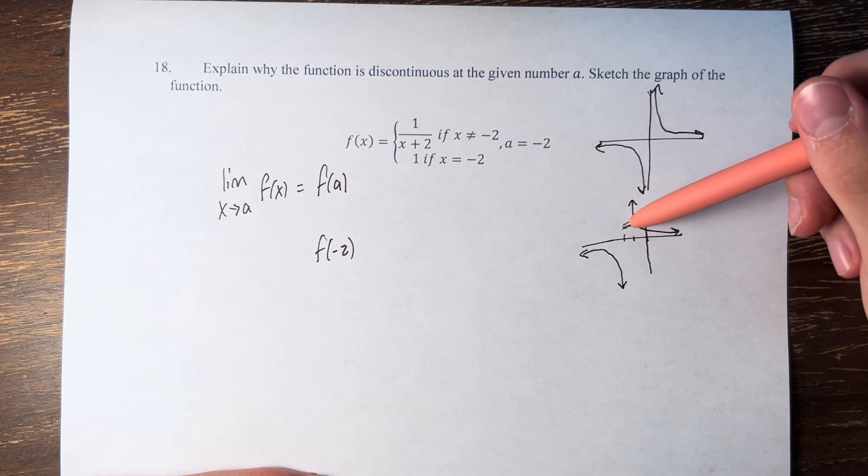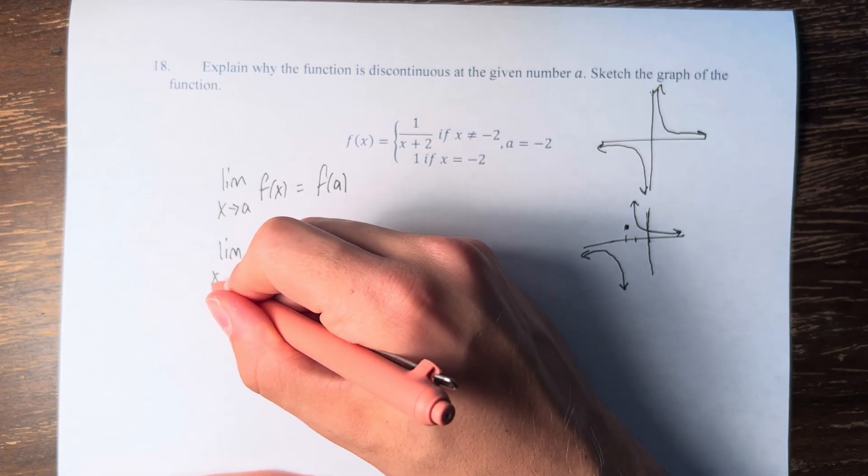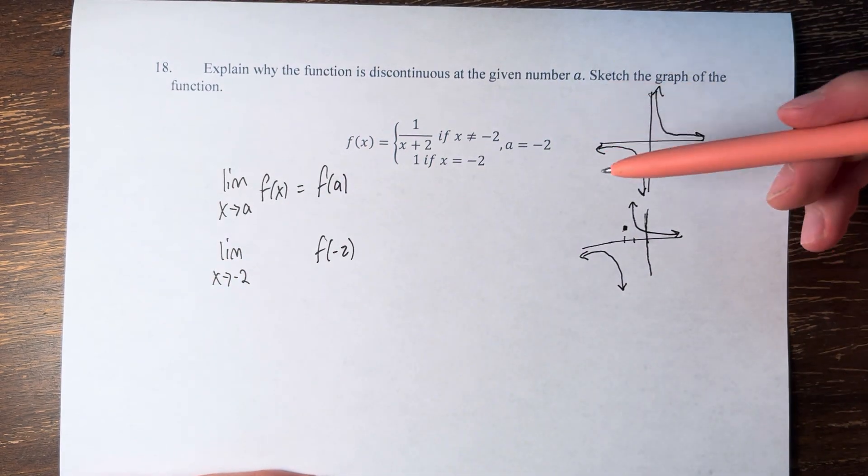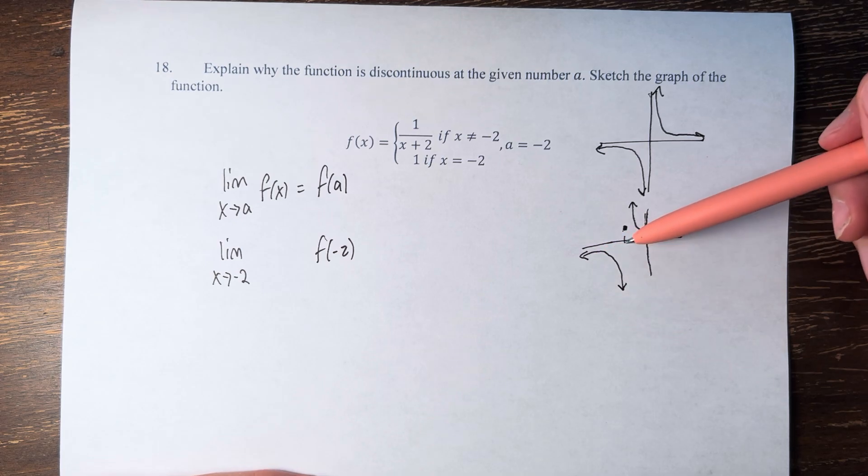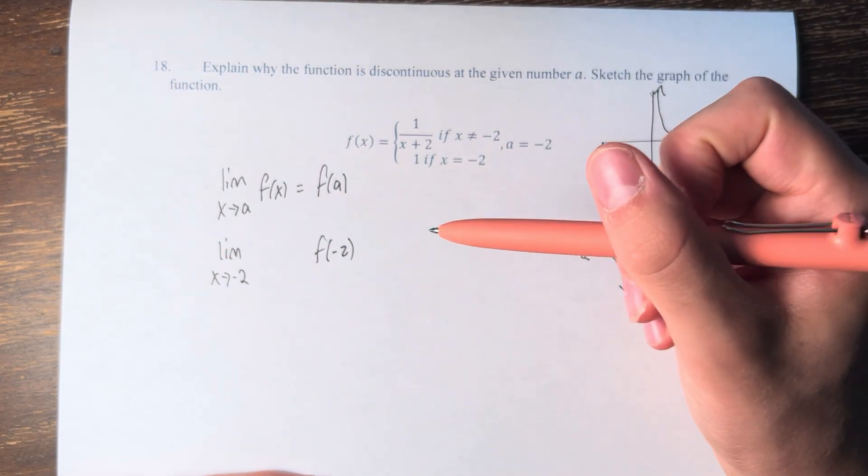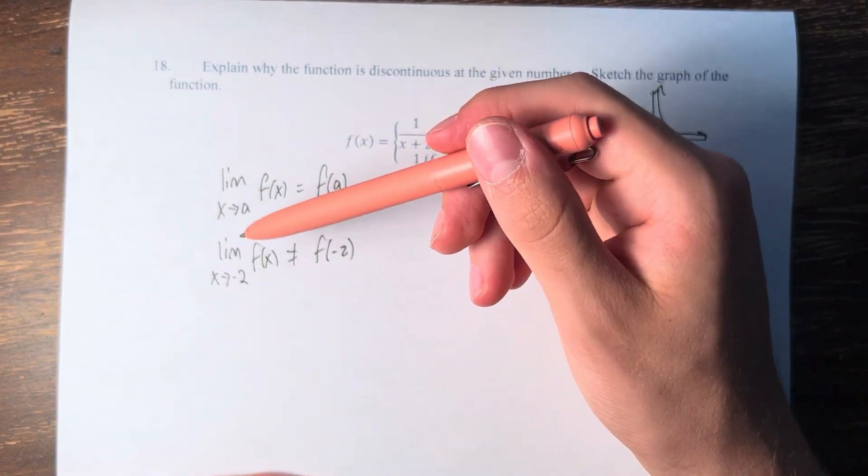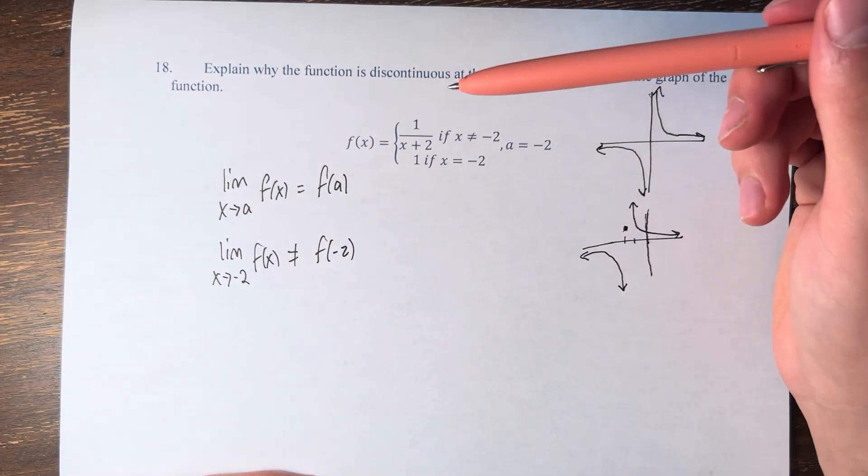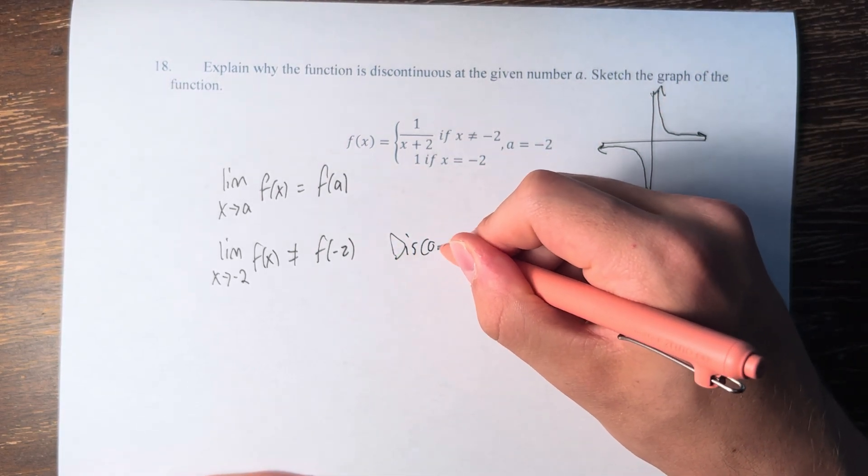And we can see as we approach the value of negative 2, as x approaches negative 2, we can see not only is the function not approaching the value of 1, it's not even approaching the same value, so the limit doesn't even exist. Therefore, not only does the limit not exist, it therefore does not equal f of negative 2, and therefore the function at negative 2 is discontinuous.